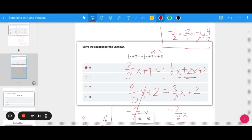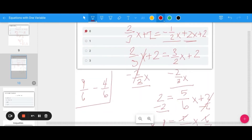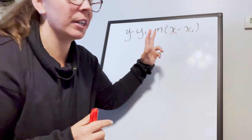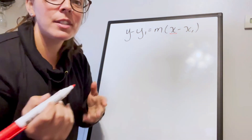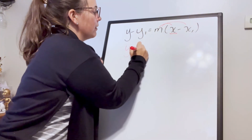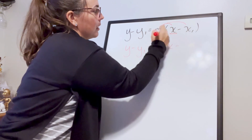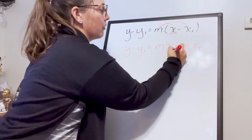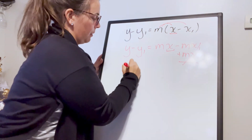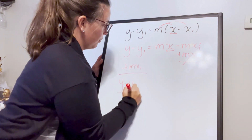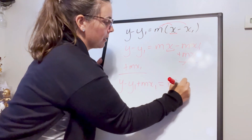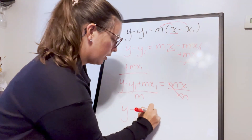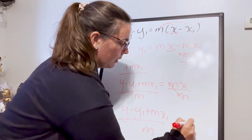A lot of steps because of fractions, but it's the same process: distribute, combine like terms, then get x by itself. Here's a multi-step equation with multiple variables where we need to solve for x. Distribute on the left side, then add the mx₁ term to both sides. Finally, divide everything by m, and the final answer follows from that.